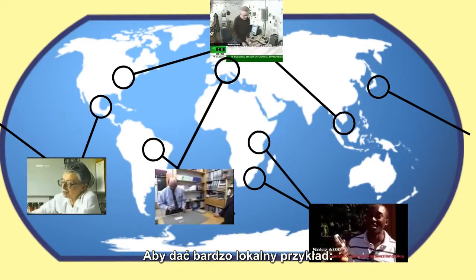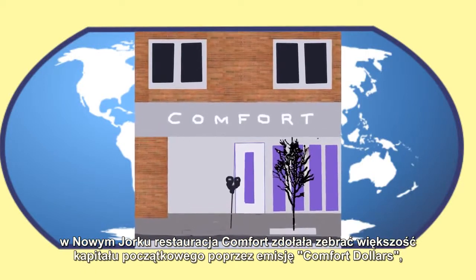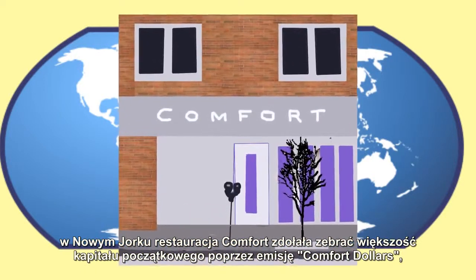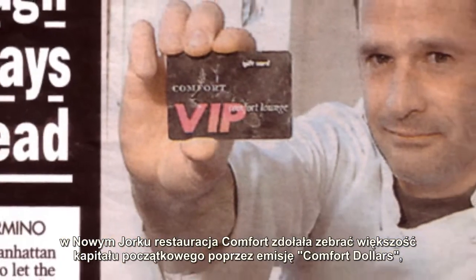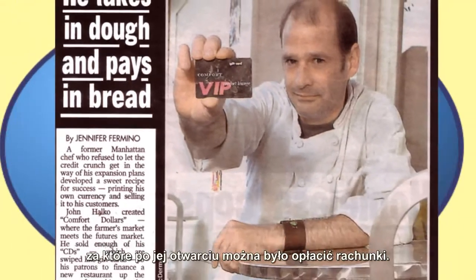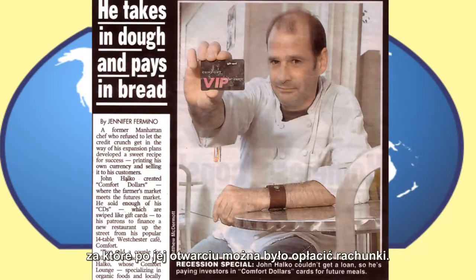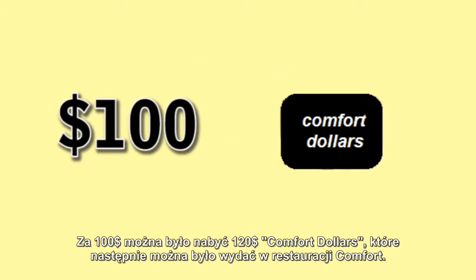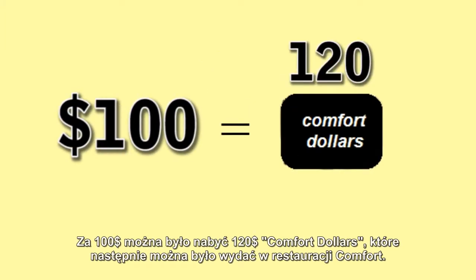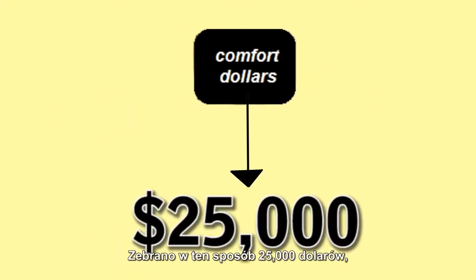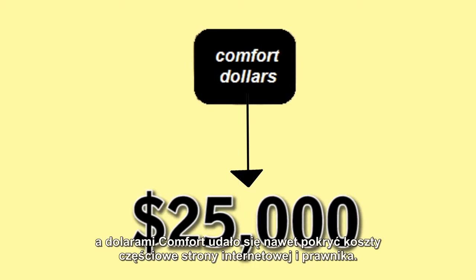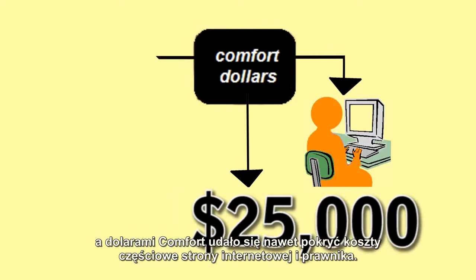To give a very local example, in New York, the Comfort restaurant was able to raise most of its startup capital by providing Comfort dollars, which it sold in exchange for food later. $100 could buy 120 Comfort dollars that could be spent at the Comfort restaurant. They raised $25,000 and were even able to use Comfort dollars for a part of their website and lawyer fees.